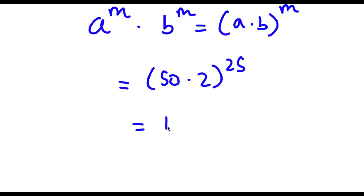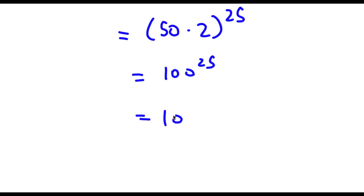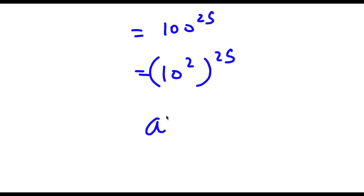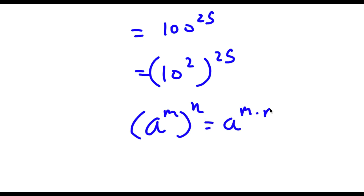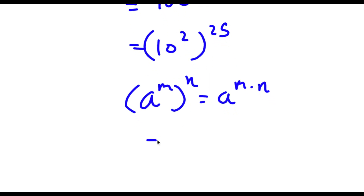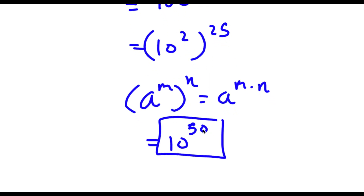Now 50 times 2 is 100, so I have 100 to the power of 25. And 100 is the same thing as 10 squared, so I have 10 squared to the power of 25. If I have a to the power of m to the power of n, this equals a to the power of m times n. So 2 times 25 is 50, giving me 10 to the power of 50. So this is my answer.